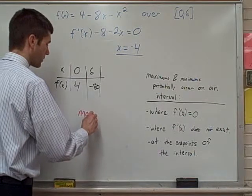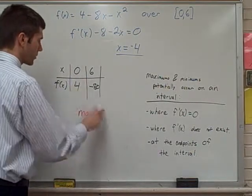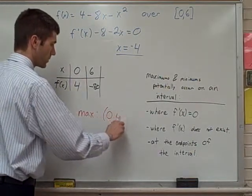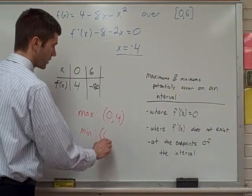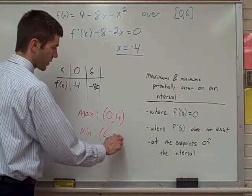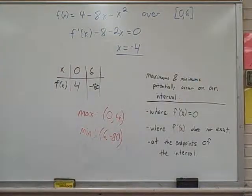The maximum point is zero, four. The minimum point is six, negative 80. There we go.